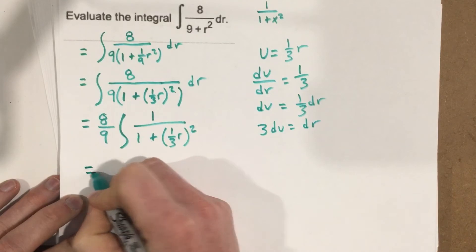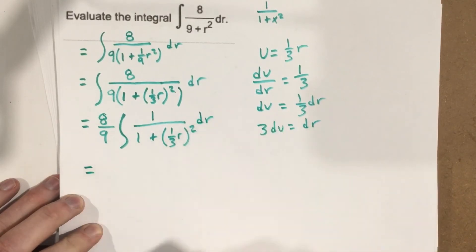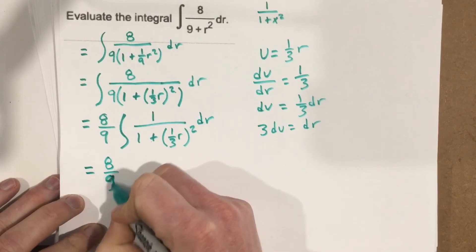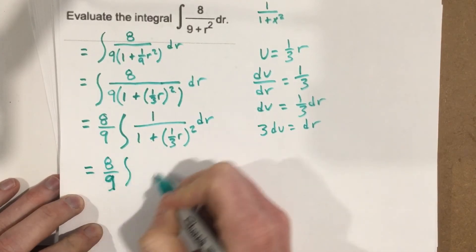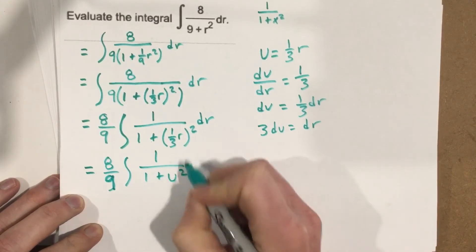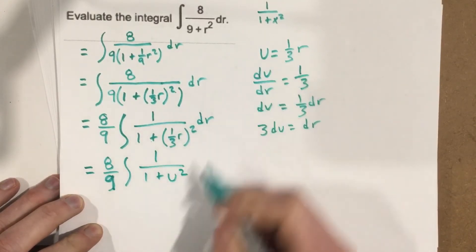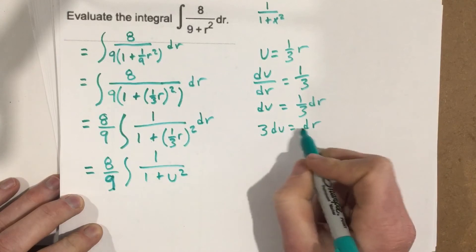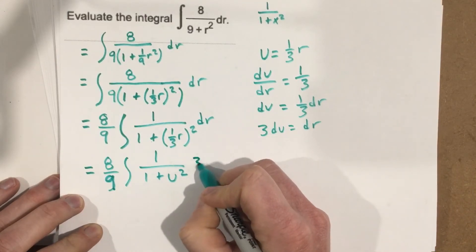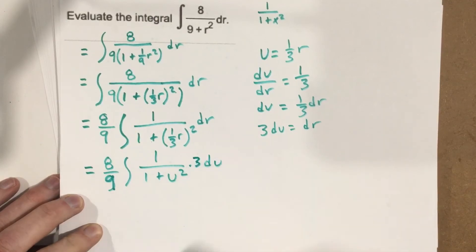And I can substitute that stuff in there. Oh, I forgot to write dr there. So it's 8 9ths integral. 1 over 1 plus u squared. Because I substitute the u for the 1 3rd r. And then I substitute for dr 3 du. So 3 du times 3 du.